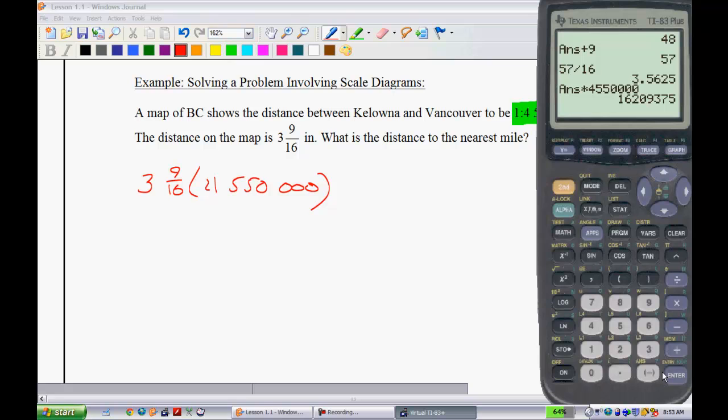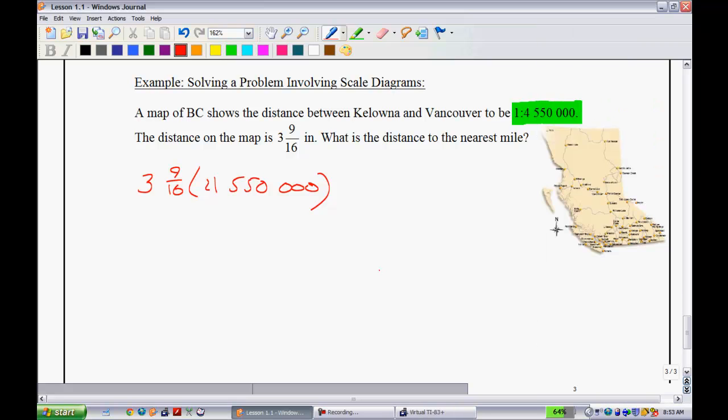We get approximately, what is that, 16 million inches. So we'll write this as 16,209,375 inches. Seems like quite a ways.